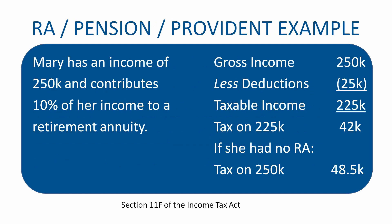For example, Mary has an income of R250,000 per annum and contributes 10% to a retirement annuity. Her gross income of R250,000 less the deduction of R25,000 leaves her with a taxable income of R225,000. The tax on that is about R42,000. If she made no RA contributions, the tax on R250,000 would be R48,500. So there's about a R6,500 tax saving because she contributed to the retirement annuity.